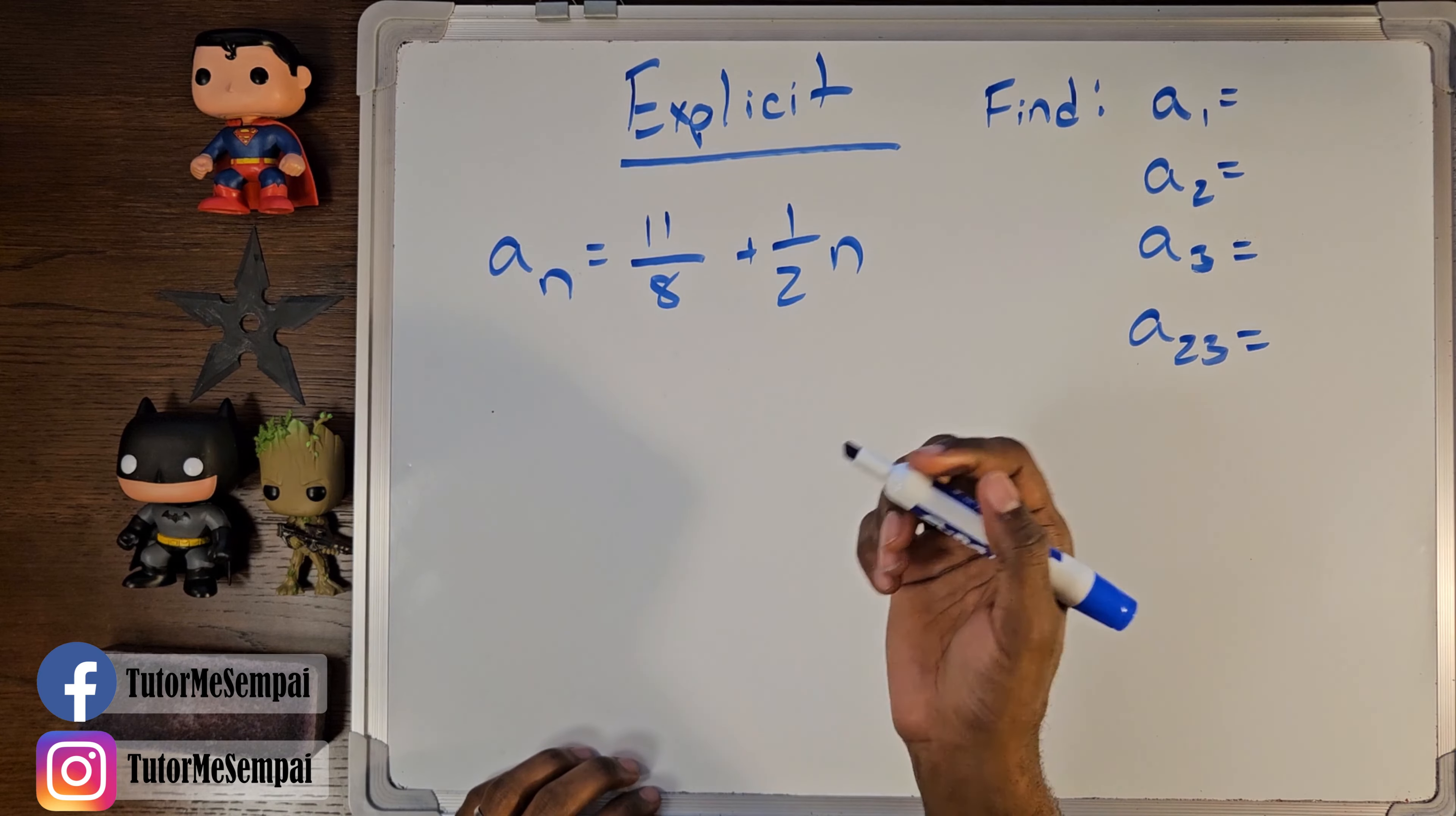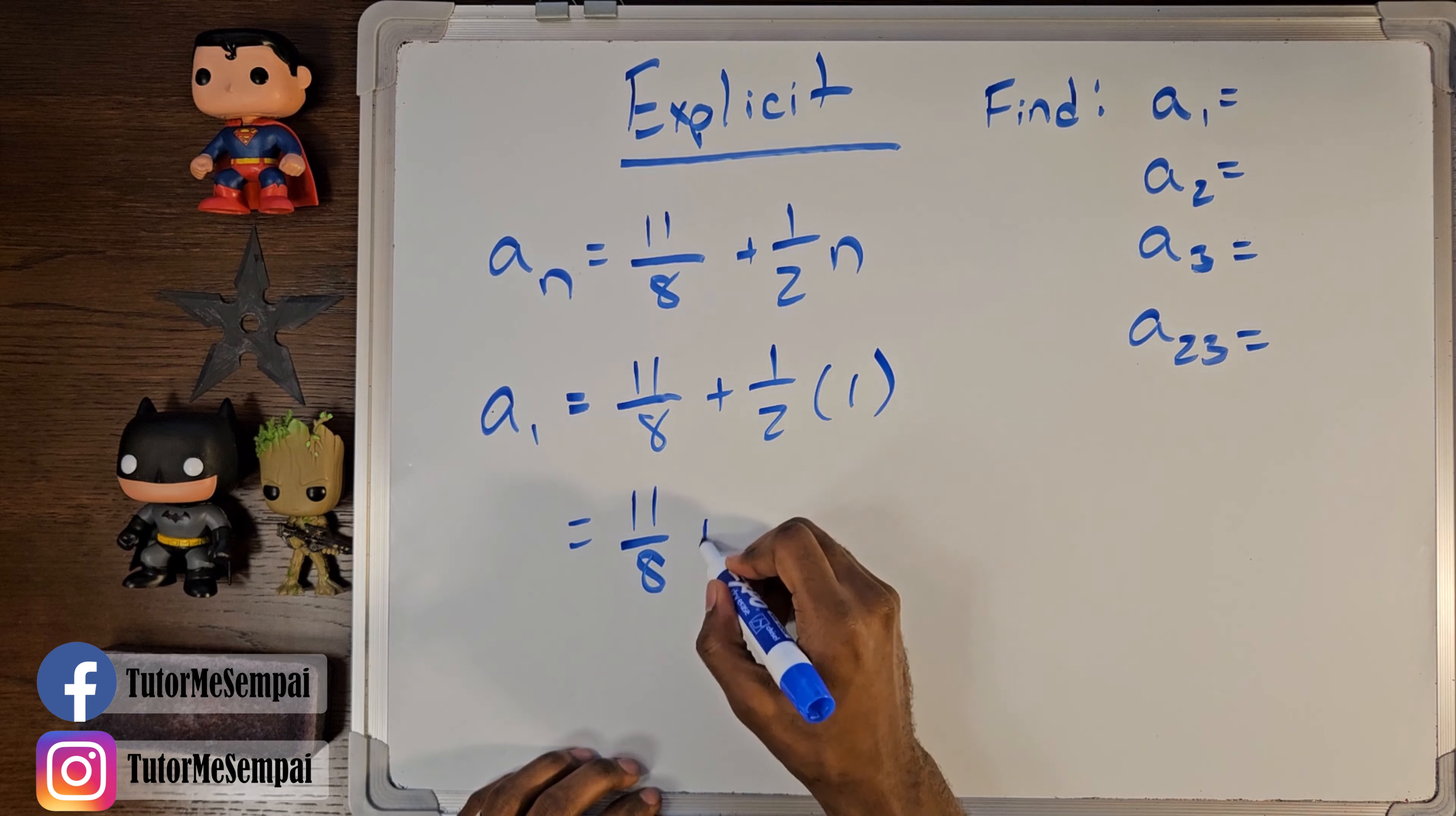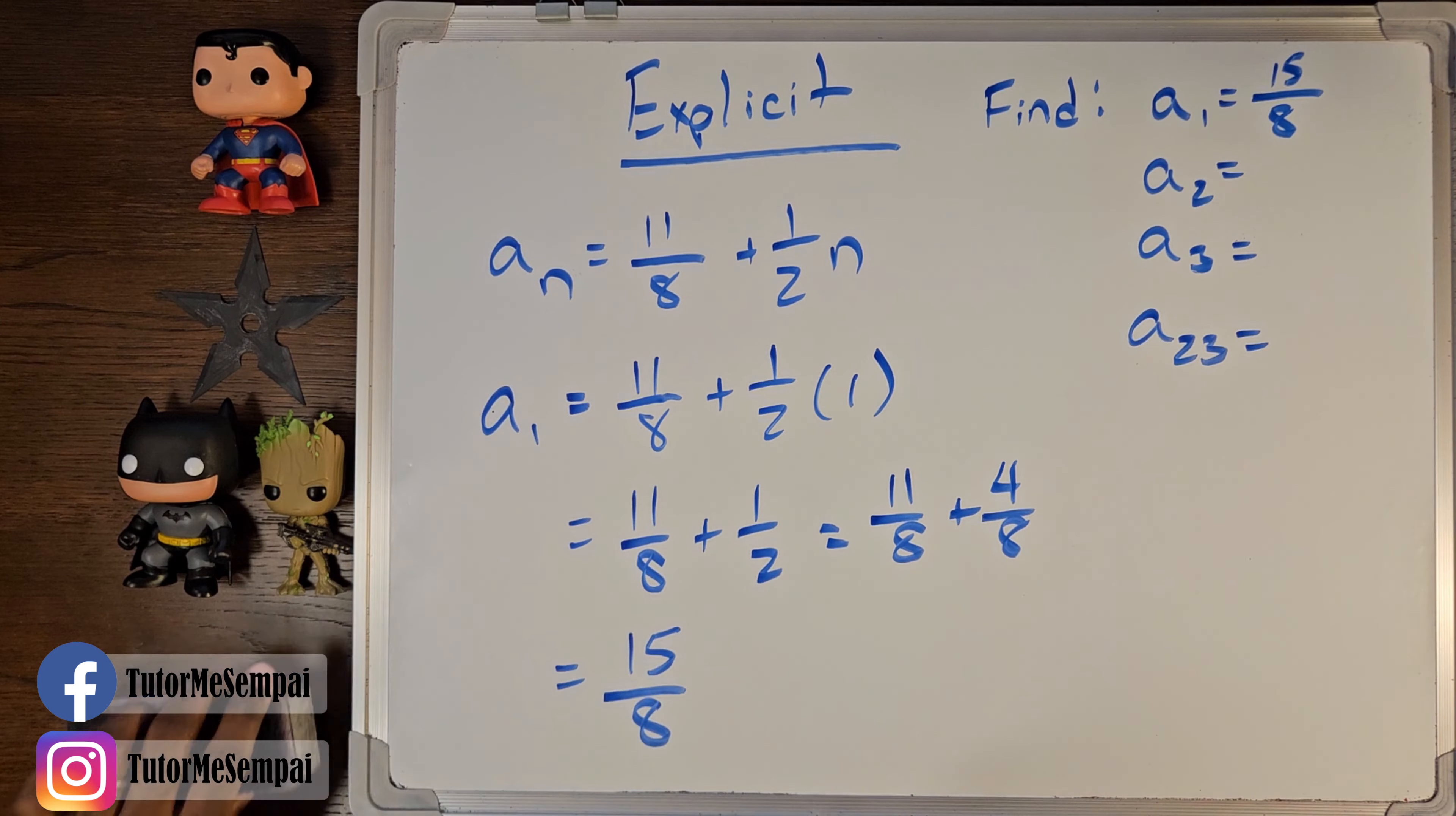If we're looking for our a sub 1, our first term, we would plug in our 1 wherever we see an n. So, we're going to have 11 over 8 plus 1 half times 1. And we can simplify this to 11 over 8 plus 1 half, which equals 11 over 8 plus 4 over 8, which gives us a final answer of 15 over 8. So, a sub 1 is going to be 15 over 8.